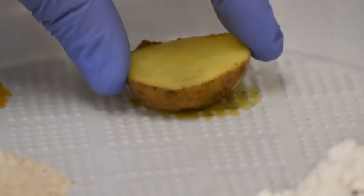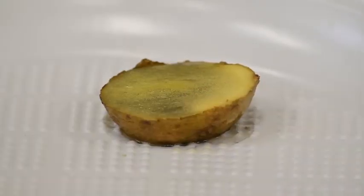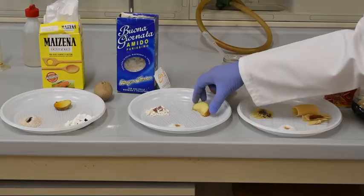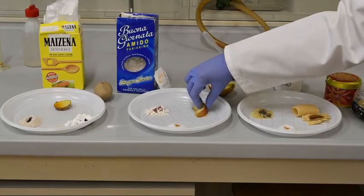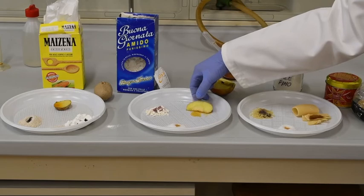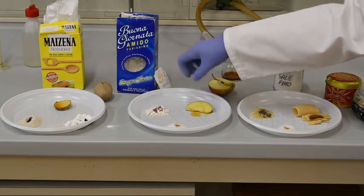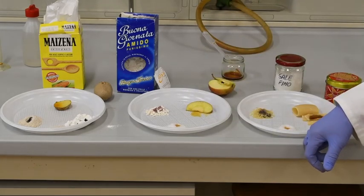Vediamo la patata, per esempio sappiamo che è ricca di amido, ma reagisce lentamente. Bisogna aspettare quasi un quarto d'ora per osservare un effetto sensibile. La mela, controlliamola bene anche sull'altro lato, vediamo invece che non contiene amido, è ricca di zuccheri ma non contiene amido.